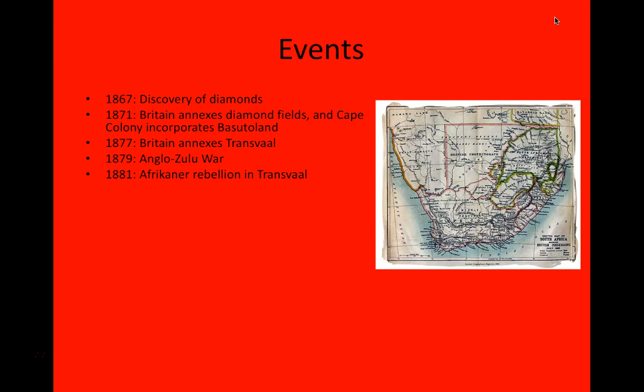This had a lot to do with debates going on in the British government over the shape of its empire, both physically and conceptually, and the waxing and waning of Afrikaner desires for independence and their chafing under British control. In 1884, after a number of setbacks and frustrations, the Cape Colony experienced difficulties in trying to govern Basutoland directly, so they reasserted the independence of Basutoland and made it a separate colony. Though, as I've said, it really functioned more as a protectorate than a colony.